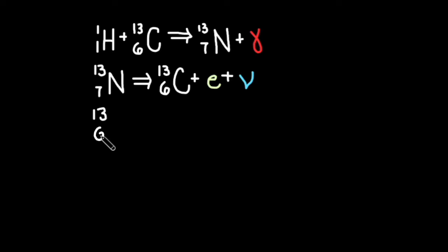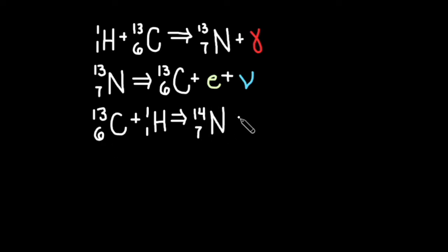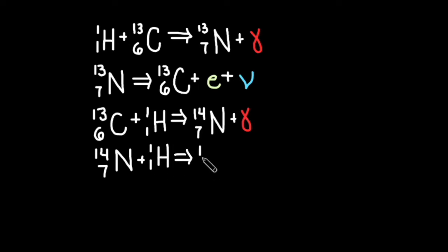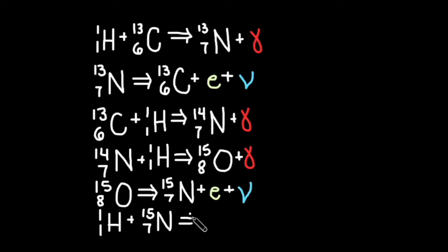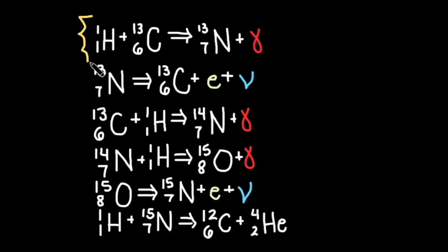Next, carbon-13 will capture a hydrogen nucleus, and nitrogen-14 will do the same thing. After another positron emission, nitrogen-15 will capture a hydrogen nucleus to form a carbon and helium atom. Once again, we have gone from hydrogen to helium.